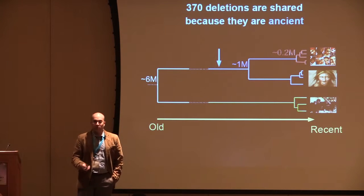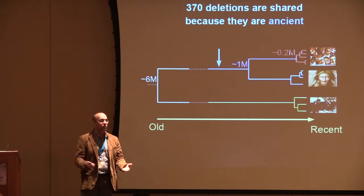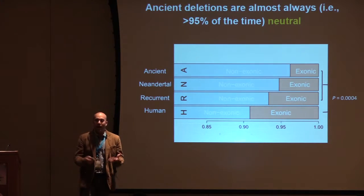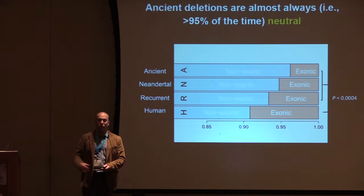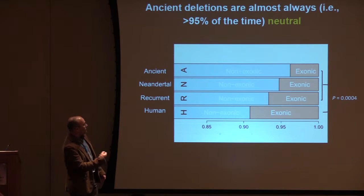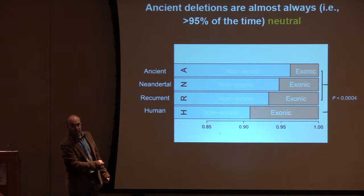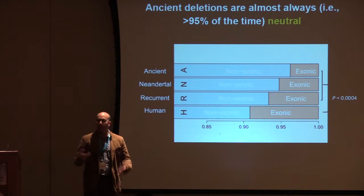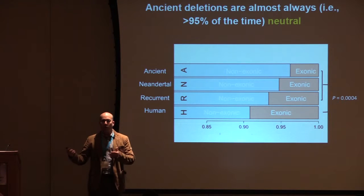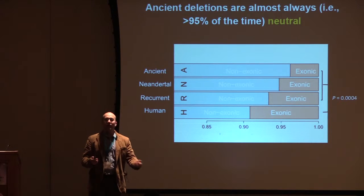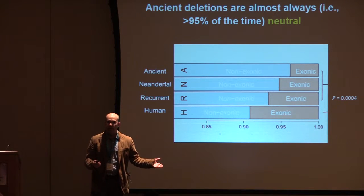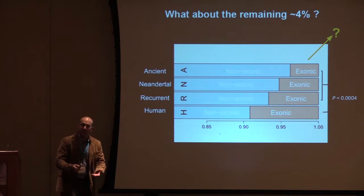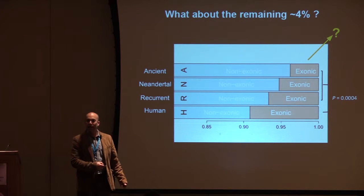The next question is: what do these ancient variants do? For most of them, they appear to do nothing — they are essentially neutral. Human deletions in general are already depleted for exonic sequence, and ancient deletions are even more depleted. The model would be that if a deletion hits an exon, it is very likely to be eliminated by negative selection. So the majority are neutral.